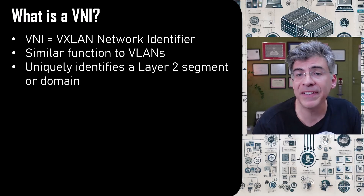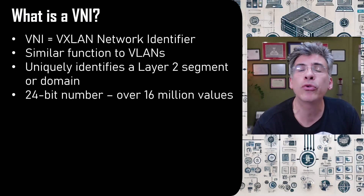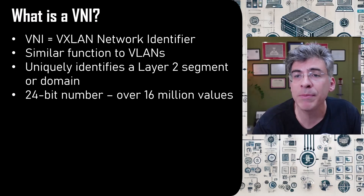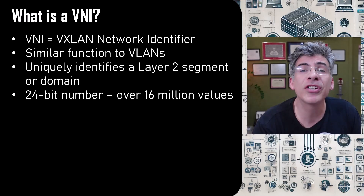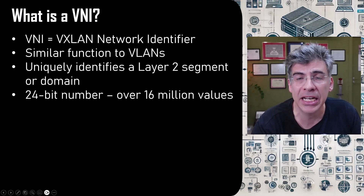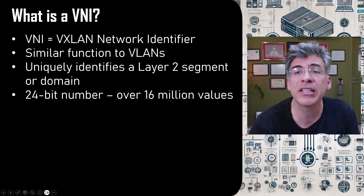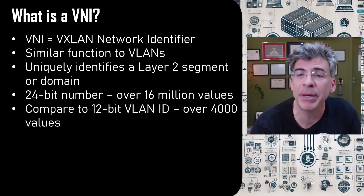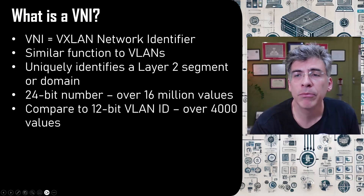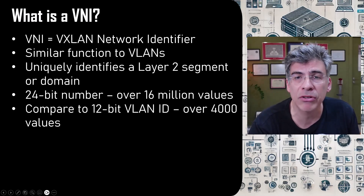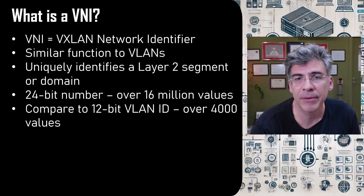The VNI is represented using a 24-bit number, which means that you can define over 16 million VNIs. That's a huge increase compared to the 12-bit value provided by the VLAN ID, which gives us just over 4,000 VLAN IDs to work with.